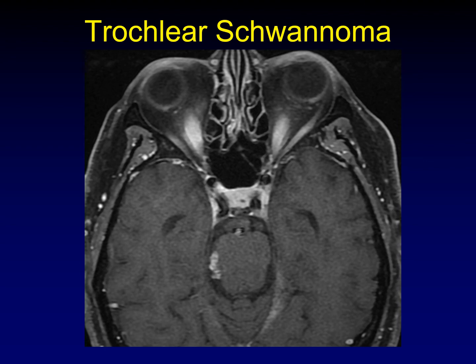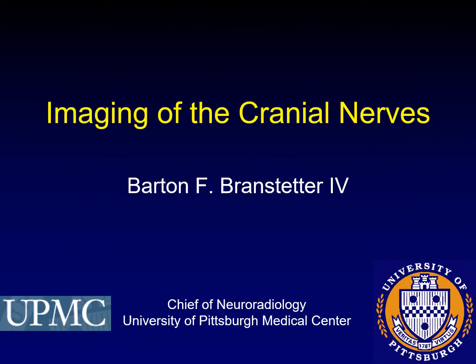I have very few examples of trochlear pathology. Here is a schwannoma running along the trochlear nerve just as it's diving into its dural sheath along the medial aspect of the tentorium. It has the characteristic enhancement pattern of a schwannoma and is in the expected location of the fourth cranial nerve. This ends part two on the lecture on imaging of the cranial nerves.